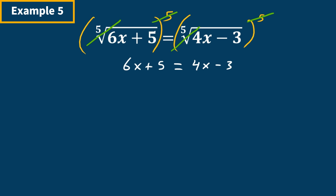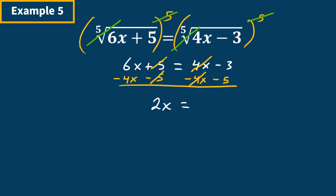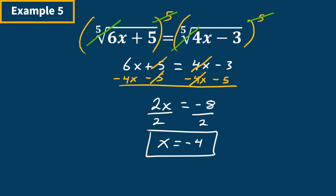From here we get all x's on one side and constants on the other. We subtract 4x and subtract 5 from both sides in one step. The 5s cancel and the 4x terms cancel, leaving 2x equals negative 3 minus 5, which is negative 8. Dividing both sides by 2, x equals negative 4. After checking, this answer is indeed correct, so this example is complete.